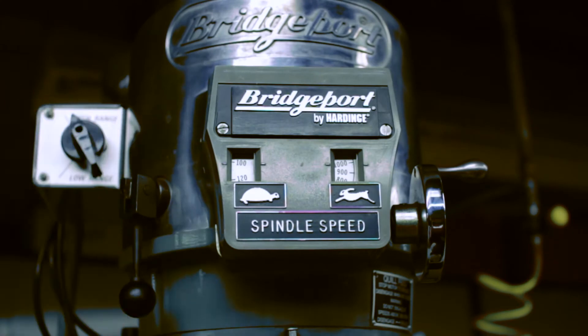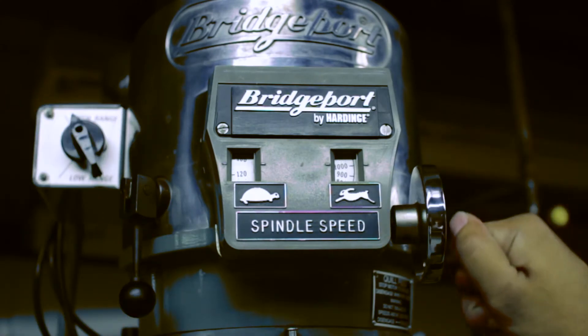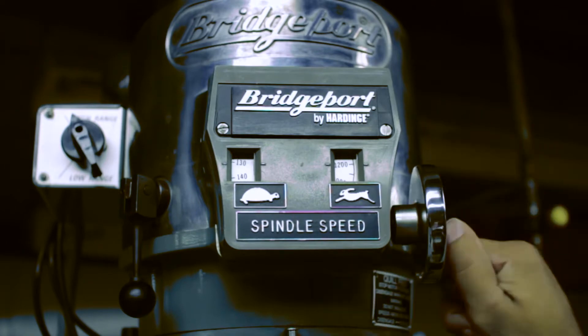Turn on the machine and reference the rapid side of the speed adjustment panel. Turn the handle accordingly, and your RPM will change.